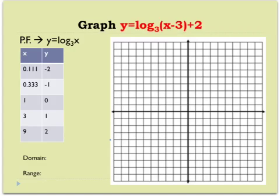Now we're going to translate a logarithmic function. We always begin with the parent function y equals log base 3 of x and look at what happened to it. The minus 3 next to x means I shifted the graph right 3, and the plus 2 on the outside means I shifted up 2. That means all x coordinates get 3 added and all y coordinates get 2 added. So I can create a new table of values for the translated function.